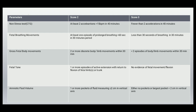For fetal gross body movements: score is 2 for two or more discrete body movements within 30 minutes; score is 0 when there are fewer than two episodes of body or limb movements within 30 minutes. For fetal tone: score is 2 for one or more episodes of active extension with return to flexion of the fetal limbs or trunk; score is 0 when there is no evidence of fetal movements or flexion.